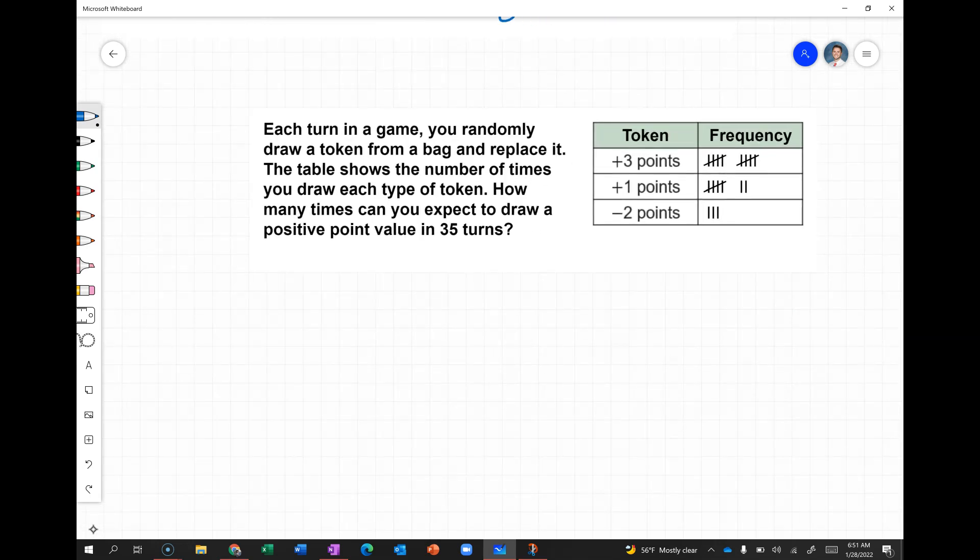Finally, each turn in a game you randomly draw a token from a bag and then replace it. The table shows the number of times you draw each type of token. How many times can you expect to draw a positive point value in 35 turns? First, let's look at our relative frequency. We have done a total of 20 turns, and our favorable outcome is a positive value. The +3 points and +1 points are positive values. The -2 points is not positive. We've gotten +3 points 10 times and +1 points 7 times. That's 17 favorable outcomes out of 20 total. Our relative frequency is 17/20, which as a percent is 85%.